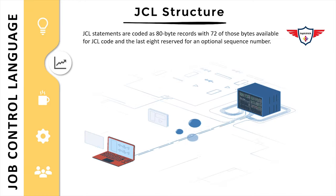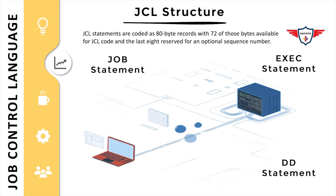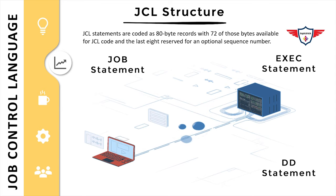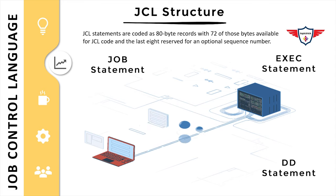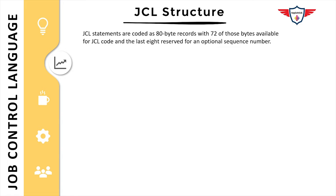A JCL is made up of three kinds of statements. The first one is the JOB statement, the second is the EXEC statement, and the third is the DD statement. JCL statements are coded as 80-byte records, out of which the first 72 bytes are available for JCL code and the last eight bytes are reserved for the sequence number. Now let's look at the JCL structure in detail.